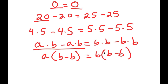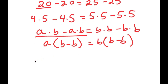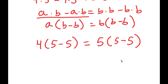Applying this to our numbers: on the left I factor out 4, giving 4 times (5 minus 5), and on the right I factor out 5, giving 5 times (5 minus 5). So I have 4 times (5 minus 5) equals 5 times (5 minus 5).